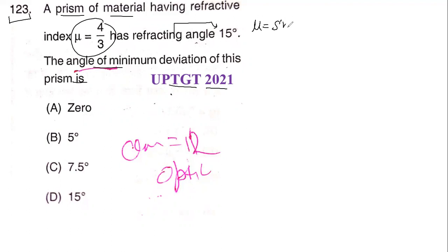We use formulas like sin((A + δₘ)/2) = μ sin(A/2), but we can also use δₘ = (μ - 1)A, where A is the angle of prism or refracting angle. We use this formula for small angles.